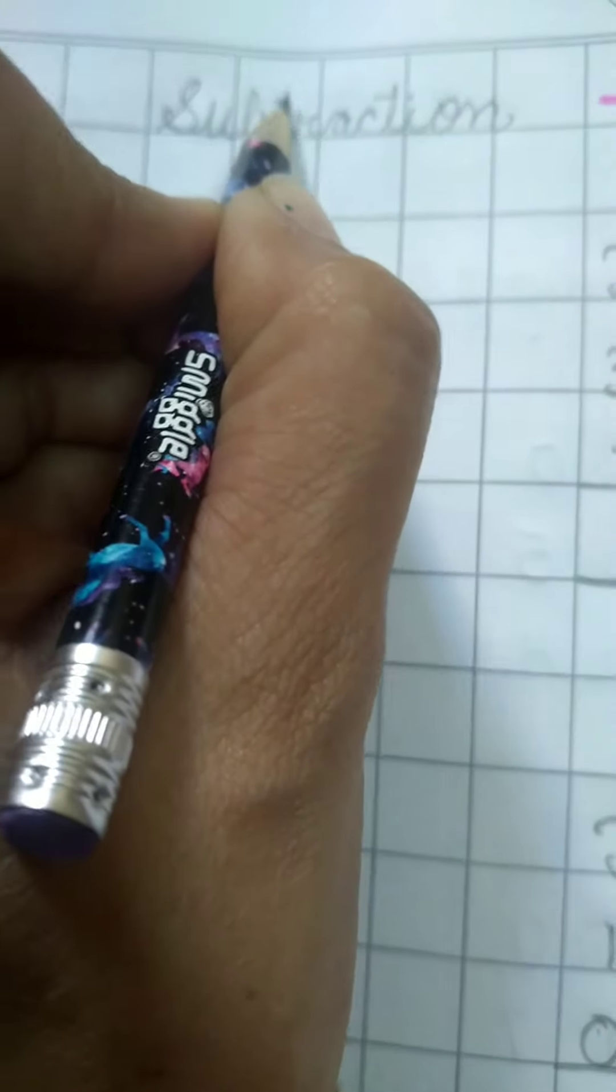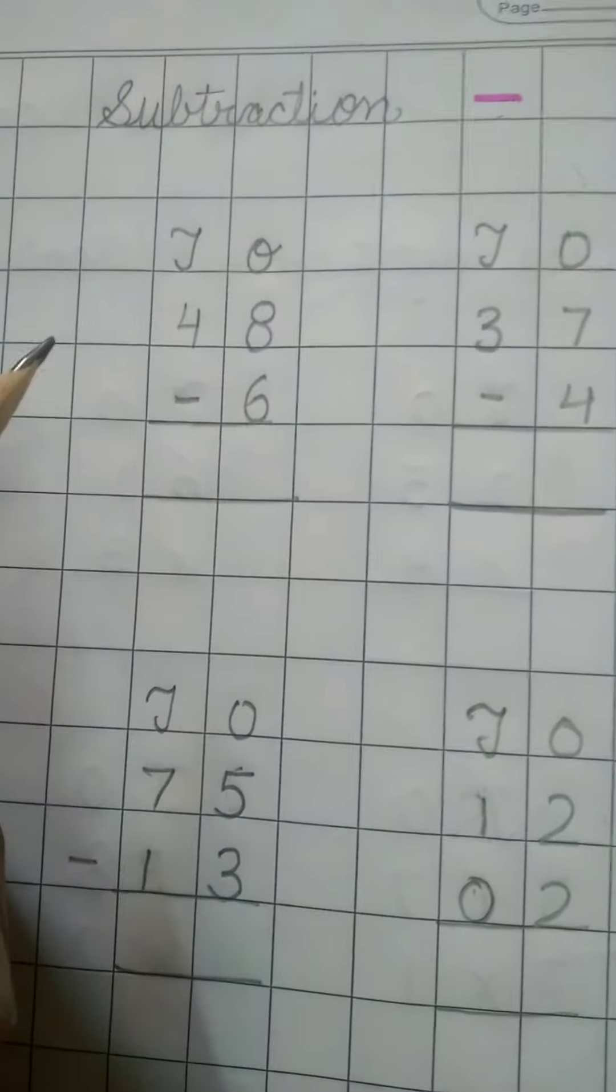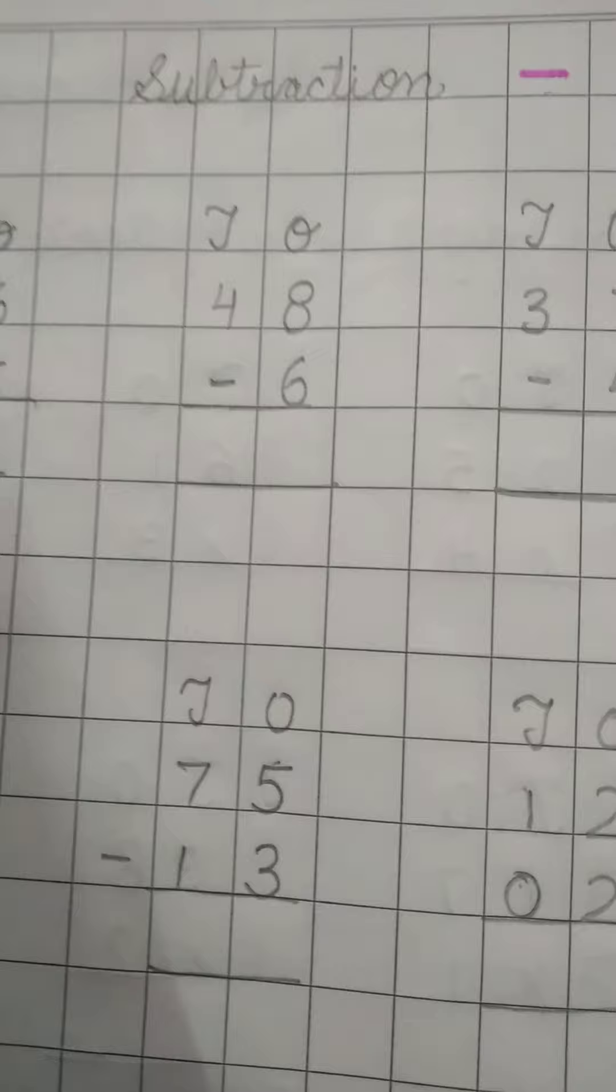What do you mean by subtraction? Subtraction means to remove the numbers, and this is the sign of subtraction - minus. You have to minus small numbers from big numbers. Like here is a pencil and pen.